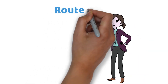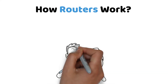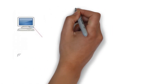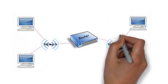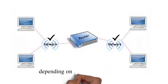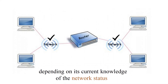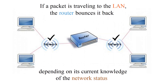Where does a router belong in the OSI model? A router resides in the network layer of the OSI model, i.e., the third layer. Its major purpose is to connect many types of networks. The router is connected to at least two networks and decides how to deliver each data packet depending on its current knowledge of the network status. If the packet is traveling to the LAN, the router bounces it back; otherwise, the packet is routed depending on the routing table.